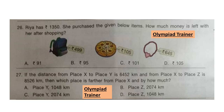Question 27. If the distance from place X to place Y is 6452 km and from place X to place Z is 8526 km, then which place is farther from place X and by how much? Looking at both numbers, place Z is farther. Find the difference of both numbers. The correct answer is option B: place Z is farther by 2074 km.